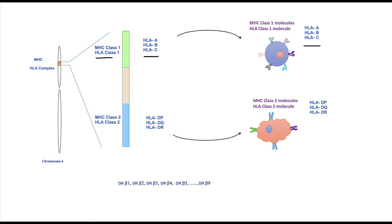These genes encode only the alpha peptide chain of class 1 molecules. Similarly, three genes in the class 2 region encode both alpha and beta peptide chains of class 2 molecules. In the case of HLA DR, more than one gene can be present that encodes the DR beta chain. So the total number of HLA class 2 molecules can be more than six.